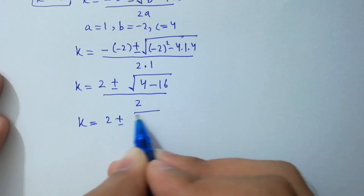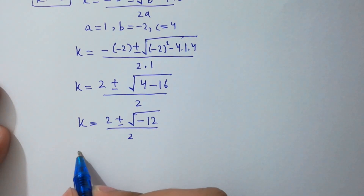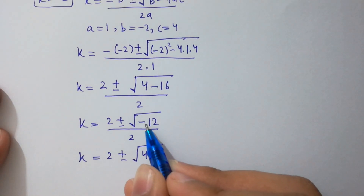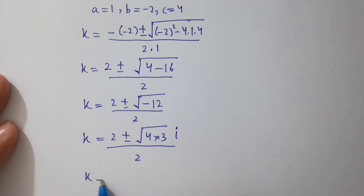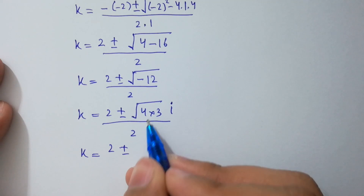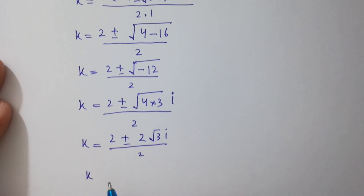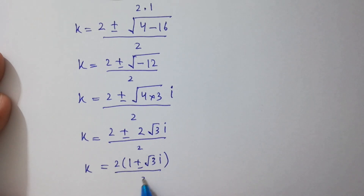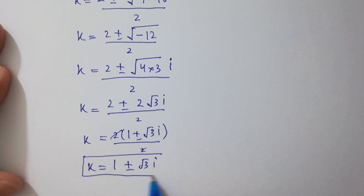k equals 2 plus or minus square root of minus 12, over 2. Since 12 equals 4 times 3 and square root of minus 1 equals i, we get k equals 2 plus or minus 2 square root of 3i, over 2. Cancelling the 2s, k equals 1 plus or minus square root of 3i, which is our first complex solution.